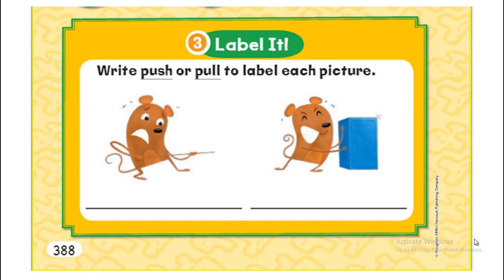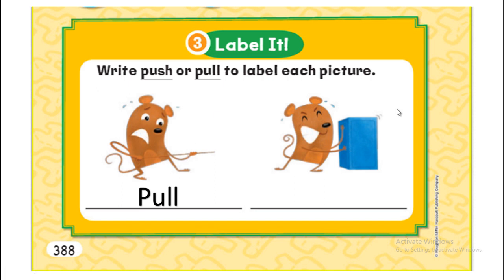Now write push or pull to label each picture. Where is push and where is pull? Here, he has a rope in his hand and he is pulling it towards him — he wants the object to move closer to him, so this is a pull. But here, he is pushing the box away — he wants the box to move away from him, so this is a push.